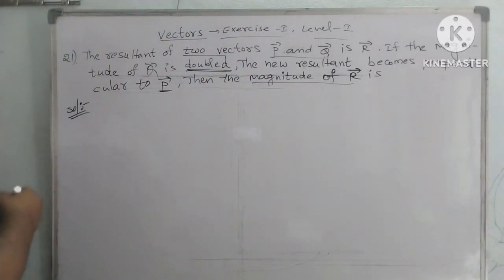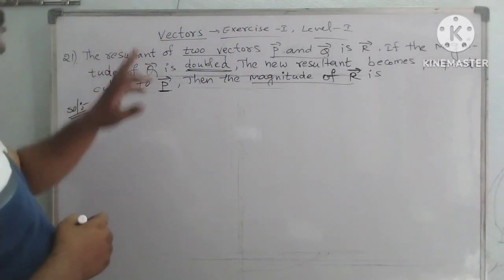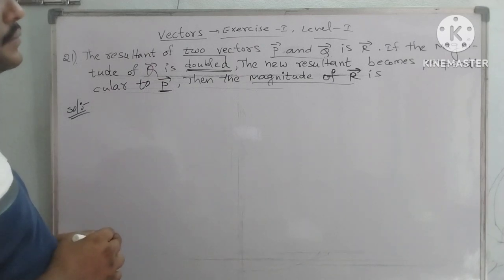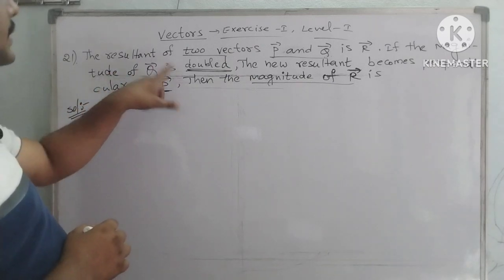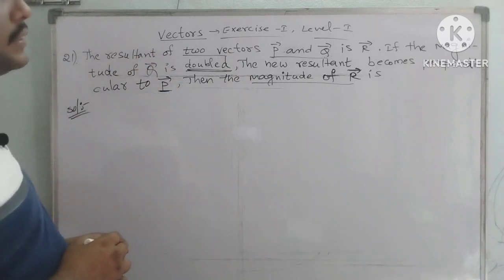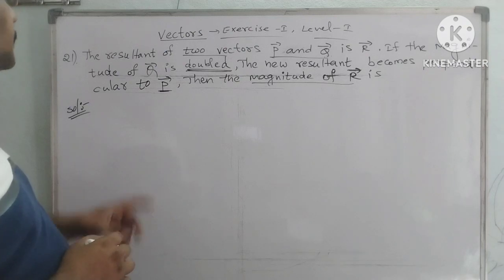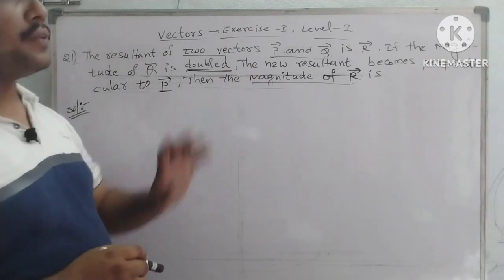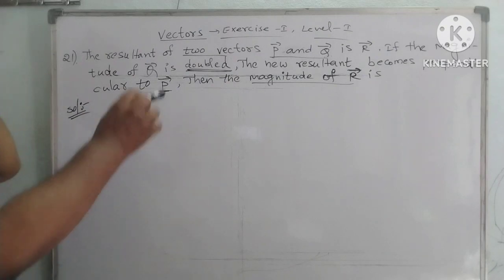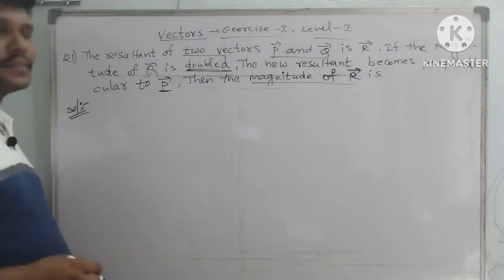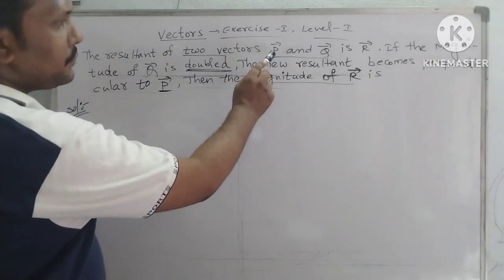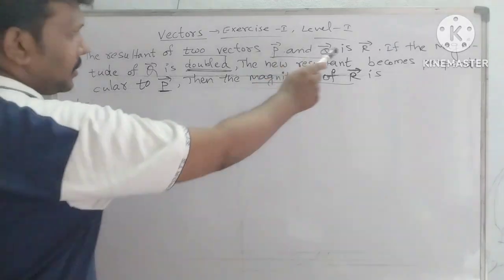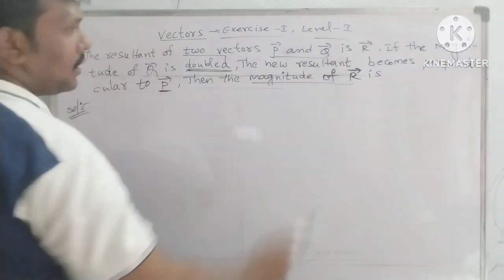The problem: the resultant of two vectors P vector and Q vector is R vector. If the magnitude of Q vector is doubled, the new resultant becomes perpendicular to P vector. Then the magnitude of R vector is how much? We have two vectors, P vector and Q vector, and their resultant is R vector.